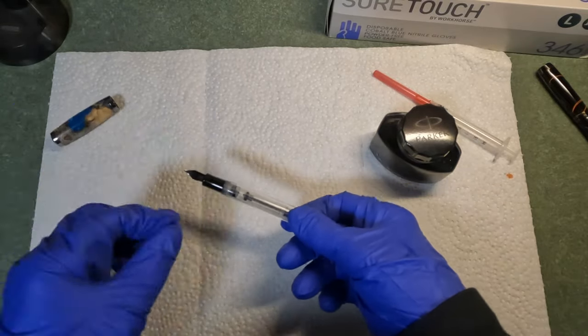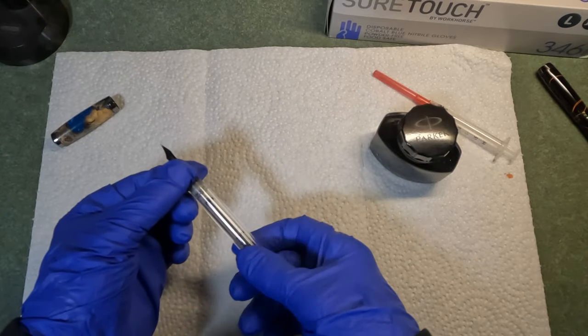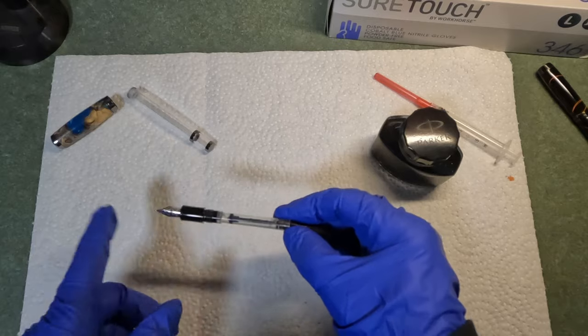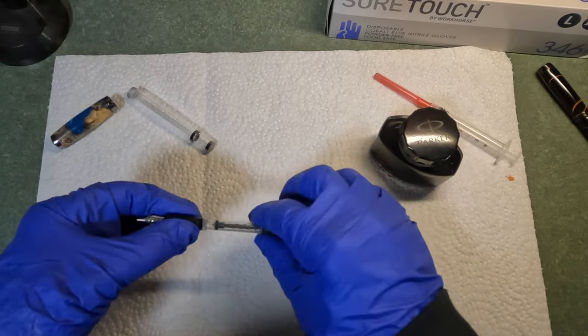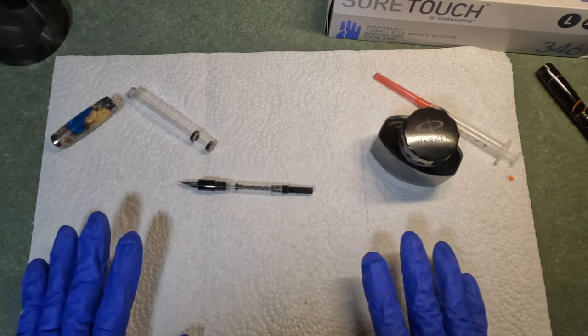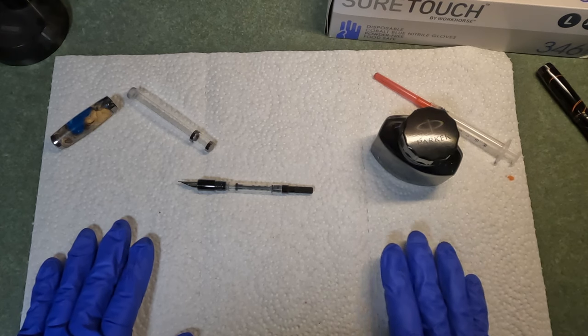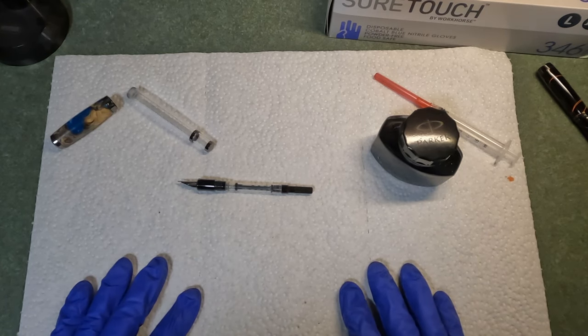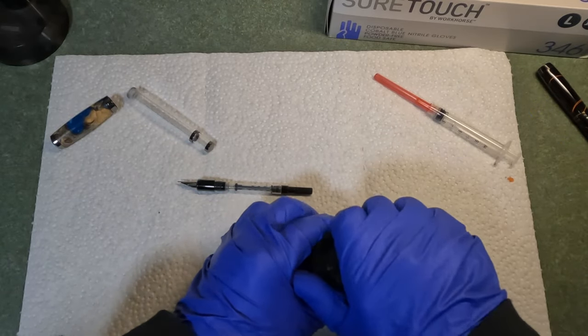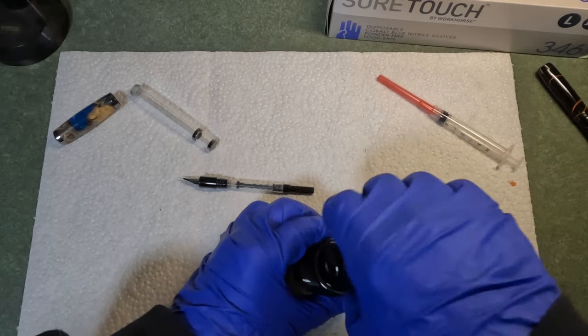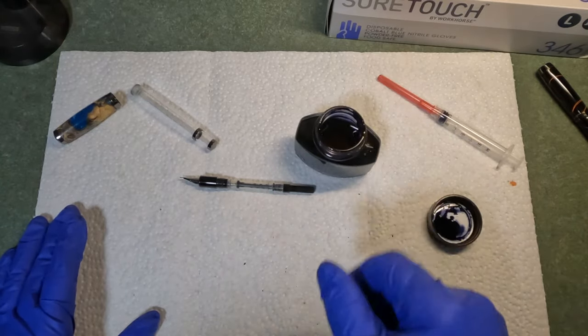Now to fill the pen, take the cap off and then we're going to remove the barrel. That leaves us with the nib, the feed, and the converter. So we're going to talk about three different ways to fill a fountain pen. We're going to talk about two of the more common methods, and then we're going to talk about the way I do it. So method one is take your ink. Now, before we even get into filling it, let's talk a little bit about ink.